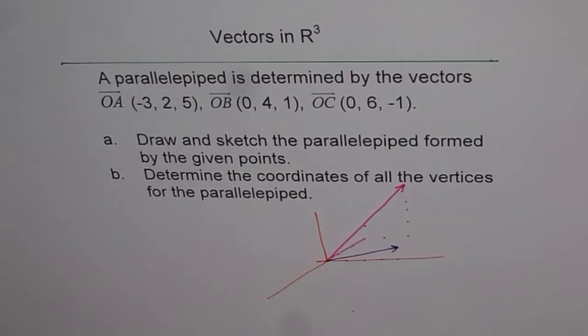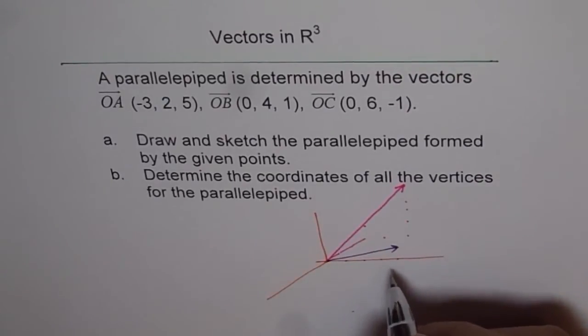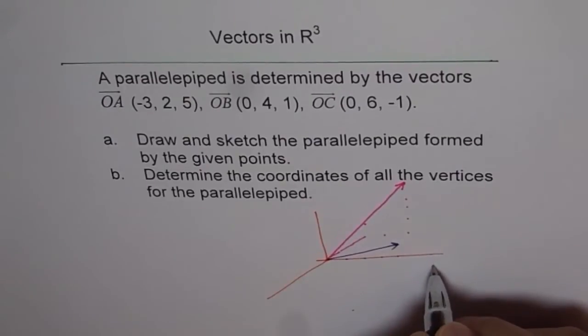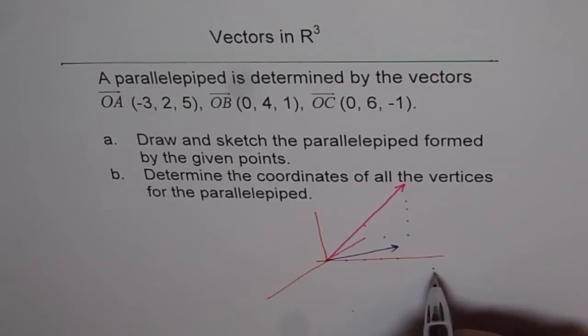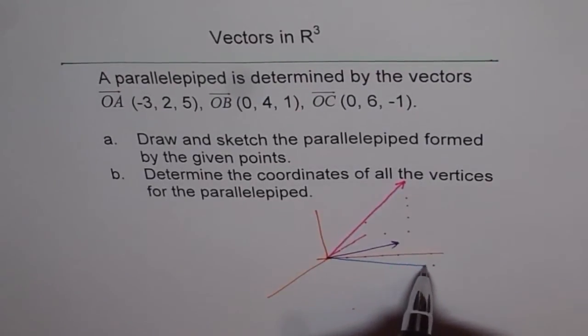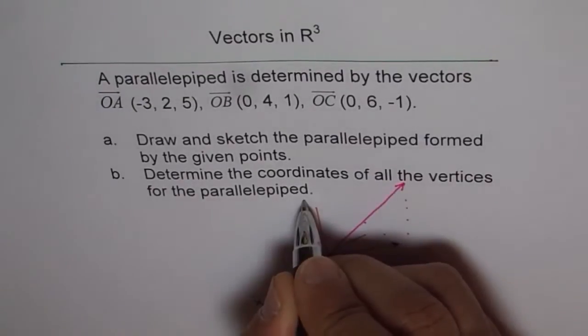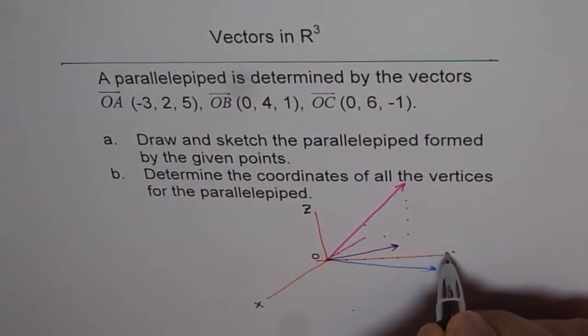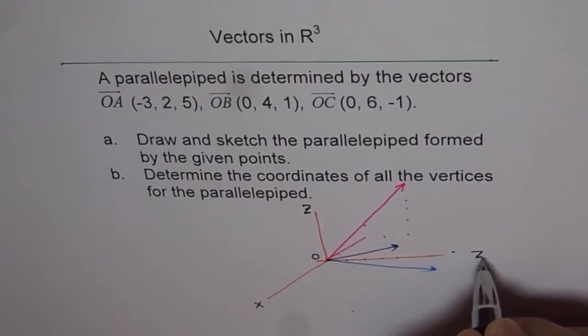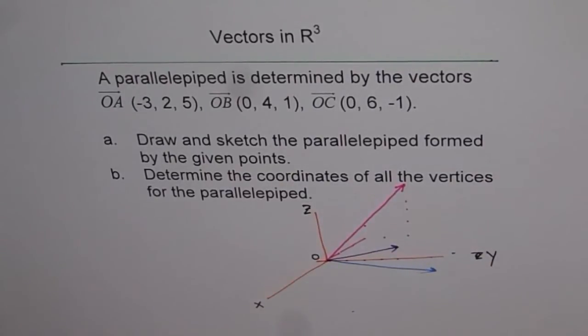Now OC is (0, 6, -1). So 0 and 6. We are already here at 4. 5 and 6. And 1 down towards minus z. So that is the vector OC. So we have our vectors here, which are OA, OB, and OC. This is origin O. This is our x-axis. That is y, z-axis. And this is y.